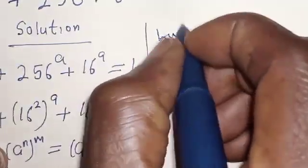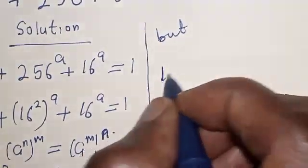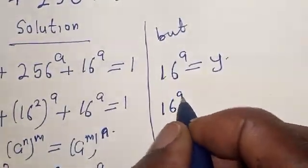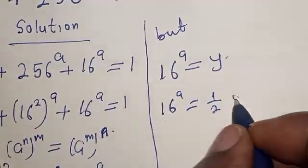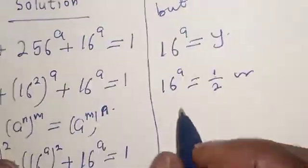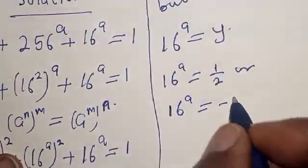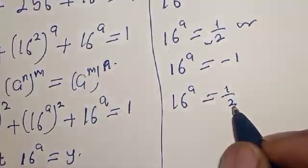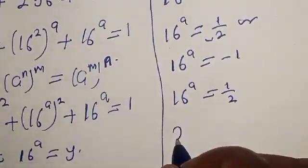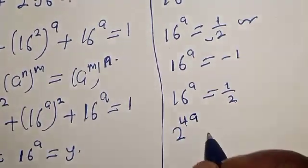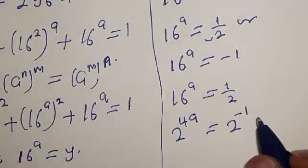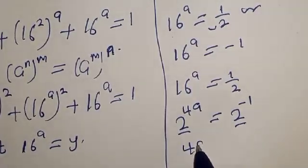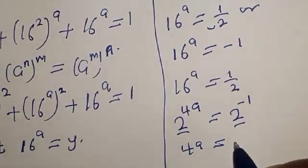Since 16 raised to power a is equal to y, we have 16 raised to power a is equal to 1 over 2, or 16 raised to power a is equal to minus 1. For the first case, 16 raised to power a equals 1 over 2. Since 16 is 2 to the power 4, we get 2 to the power 4a equals 2 to the power minus 1. They have the same base, so 4a is equal to minus 1.